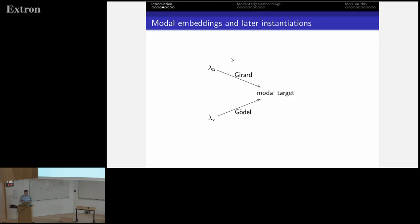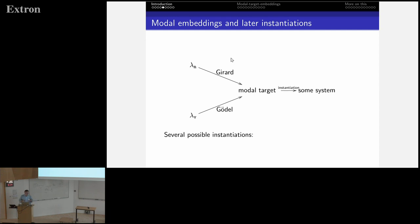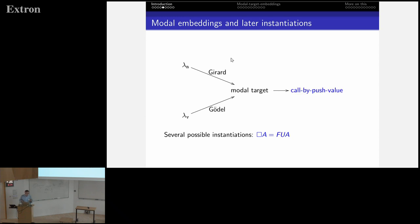Graphically, it's like this: we have the call-by-name and call-by-value lambda calculi, and Girard's and Gödel's interpretations into some modal target. Then we can consider some instantiation — there are many examples: it could be linear logic, a simple modality, or call-by-push value. I will not talk about these instantiations; I concentrate on the other part.